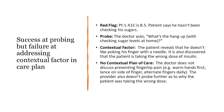This slide illustrates the second pathway — success at probing but failure to address a contextual factor in the care plan. The red flag is a patient with an A1C of 8.5 who hasn't been checking his sugars. The doctor asks, 'What's the hangup with checking your sugar levels at home?' — there's the probe. The patient reveals he doesn't like poking his finger with a needle, and it's also discovered he's taking the wrong dose of insulin. However, at the final stage the doctor drops the ball: despite eliciting the contextual factor, the doctor does not discuss preventing fingertip pain — for example, warming your hands first, lancing on the side of the finger, or alternating fingers daily. The provider also doesn't probe further as to why the patient was taking the wrong dose. We end up with no contextualized plan of care.